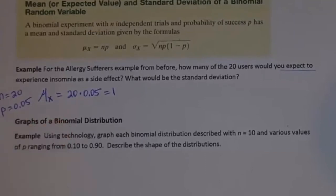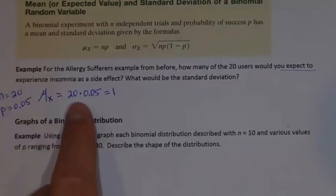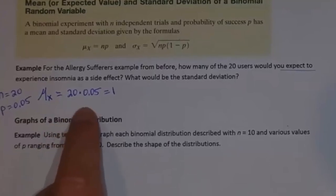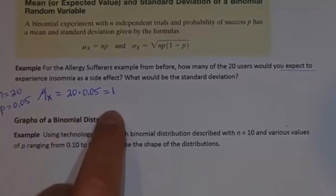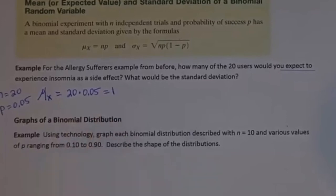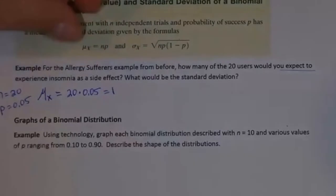If you think about it, 5% of people suffer insomnia as a side effect of Clarinex-D. So giving Clarinex-D to 20 people, we'd expect 5% of those 20 — that's 20 times 0.05, which is 1. If I gave it to 100 people, I'd expect 5 of them to suffer insomnia, because 5% of 100 is 5.